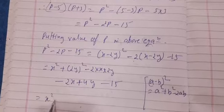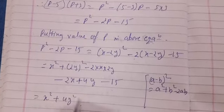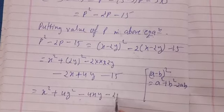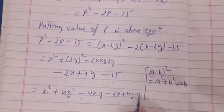Now x² + 4y² - 4xy - 2x + 4y - 15. This is our answer.